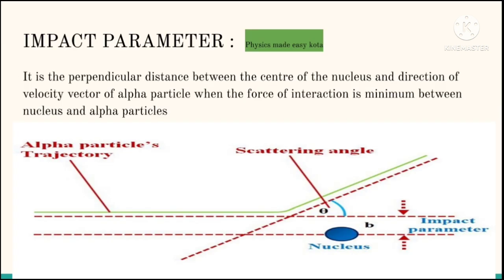Path followed by alpha particle in the electrostatic field of target nucleus depends upon the collision parameter, which is also known as the impact parameter. So, what is impact parameter?